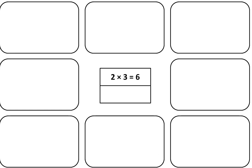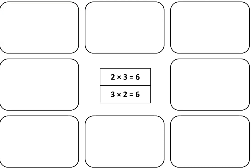Begin by writing 2 times 3 is equal to 6, and also write 3 times 2 is equal to 6. In this first number concept map, we'll explore the relationship between 2, 3, and 6. Now, let's move to the first space. In the first space, draw a triangle, and inside the triangle write the numbers 2, 3, and 6.